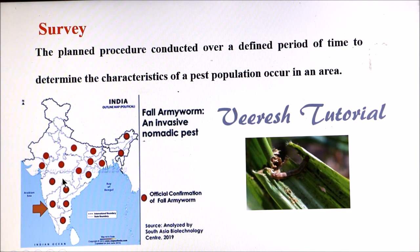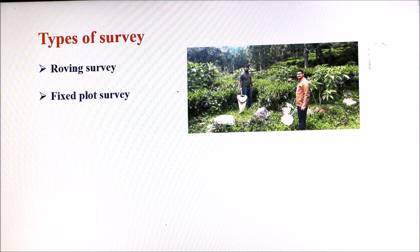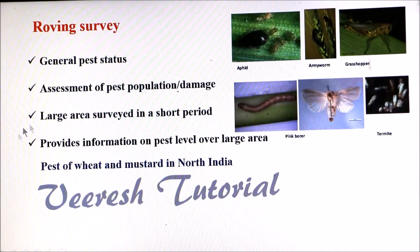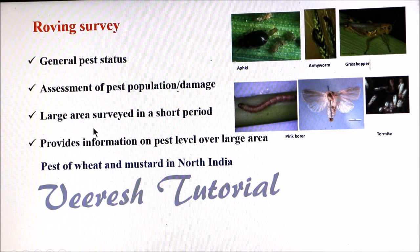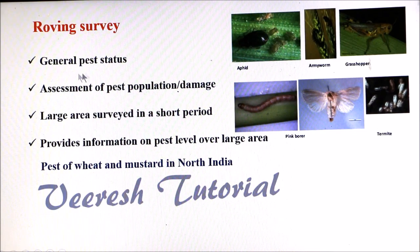Survey can be done by two ways: one is a roving survey and the second one is a fixed plot survey. In a roving survey, assessment of pest population or damage can be done for general pest status over a large area within a short period of time. If you would like to know the pest status irrespective of the pest species in a larger area — for example, to know the status of wheat and mustard pest in North India — then we will go for a roving survey.